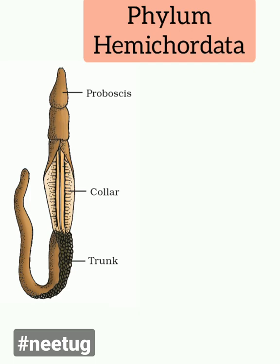Carefully observe the diagram of Balanoglossus. You can see the proboscis, collar, and trunk. The proboscis is anterior.